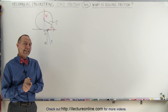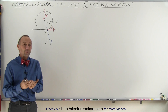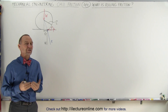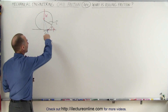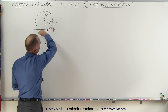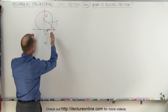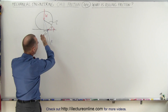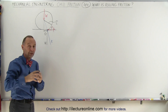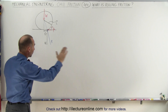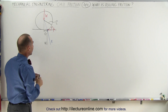Welcome to Electoral Line. In this video we're going to explore what rolling friction is. Imagine you have a wheel that's rolling over a surface — that could be the wheel of a car rolling over a road, or the wheel of a railroad car riding over a railroad tie.